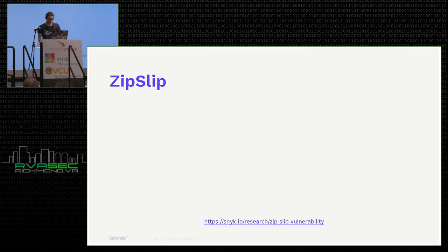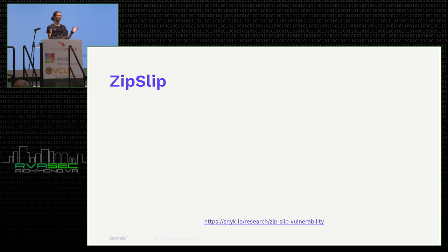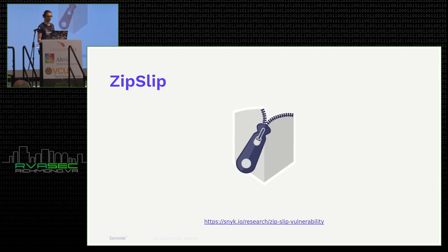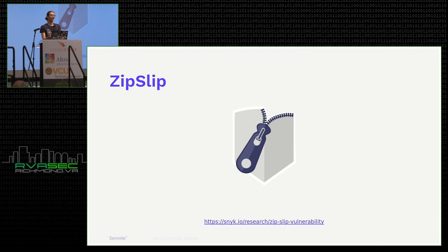This is an interesting vulnerability class. Back in June of 2018, a company called Snyk, which does dependency analysis to make sure dependencies are up to date and don't have vulnerabilities, found a worryingly large number of mistakes that all seemed to be the same mistake. Like any good vulnerability, they designed a logo for it — Zip Slip — and put a lot of effort into finding as many instances in high-impact projects and disclosing them before making the public announcement.